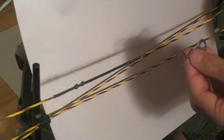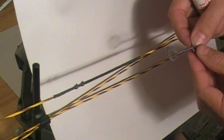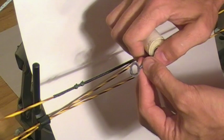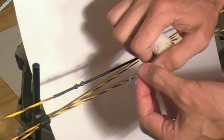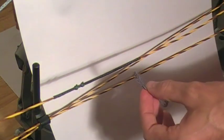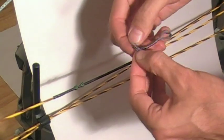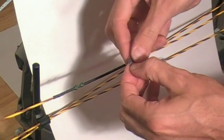This time, to install the catfish loop, we're going to install it more like a standard D loop. We're going to start the same way. Put a little bit of bowstring wax on the loose loops. We'll work that into it while lining up the loops at the same time.